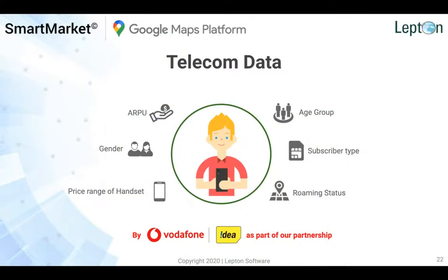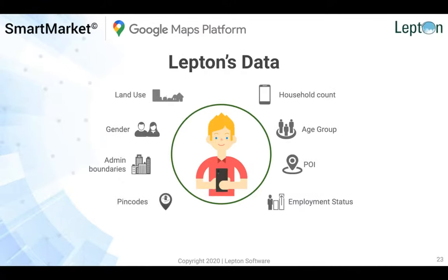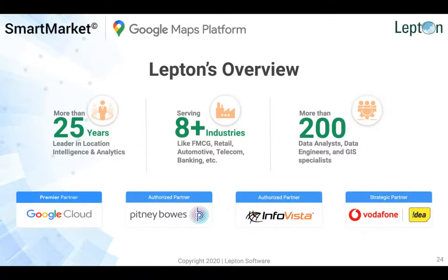In addition to COVID risk data, the platform offers other data sets including telecom data — with data sets like handset prices, subscriber types, different age groups, and international roaming status — as well as Leptin's own demographic data including household count, gender, administrative boundaries, points of interest, employment status, and land use. These different data sets can be collated along with COVID risk data to gain deeper insights into different locations. That is the demo from my side — I'll hand over back to Mansoor.